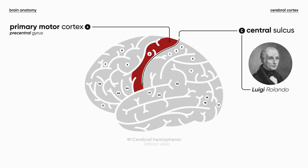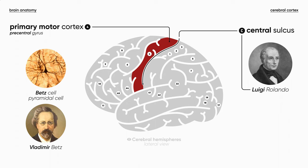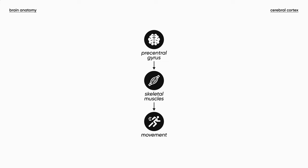The cortex covering the precentral gyrus is called the primary motor cortex — this is Brodmann area number 4. It contains the giant pyramidal neurons, actually the largest neurons in the central nervous system, also called Betz cells, that are responsible for voluntary muscle contraction and voluntary movements of the opposite or contralateral side of the body. So the precentral gyrus sends a signal to the skeletal muscles, causing their contraction.